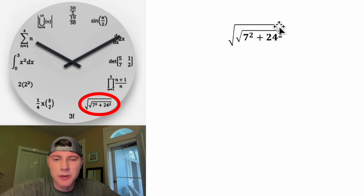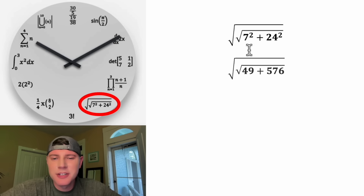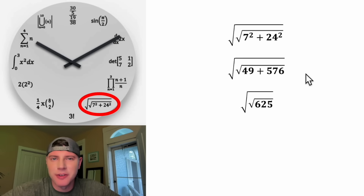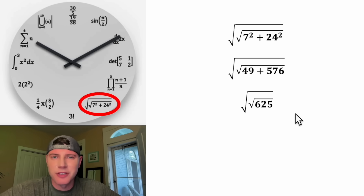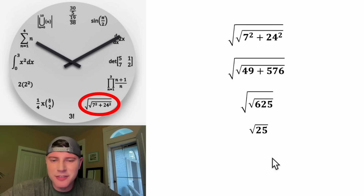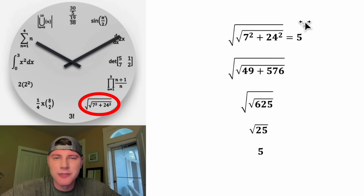Now let's look at this one. It's the square root of the square root of 7 squared plus 24 squared. 7 squared is 49, and 24 squared is 576. 49 plus 576 is 625, so we have the square root of the square root of 625. The square root of 625 is 25, and then the square root of 25 is 5. So this whole thing is equal to 5, and that's why it's in the 5 o'clock slot.